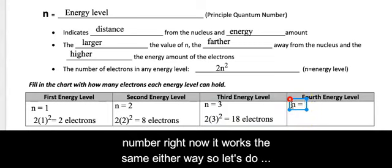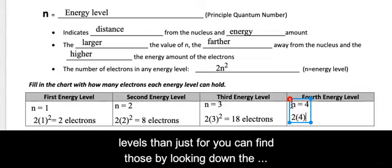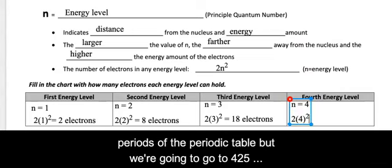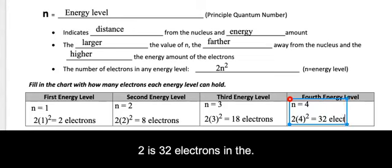And then of course, there are more energy levels than just 4. You can find those by looking down the periods of the periodic table. But we're going to go to 4 because by this time, the pattern becomes pretty evident. So 4 squared is 16. 16 times 2 is 32 electrons in that fourth level.